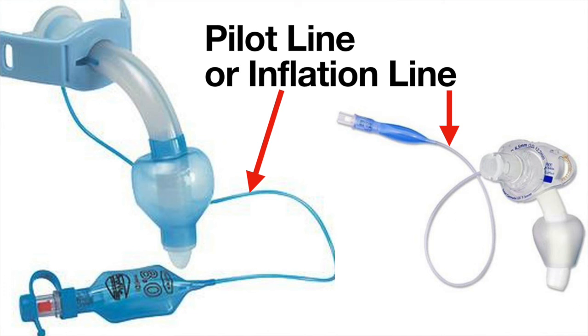There is a line which hangs off the exterior of the tracheostomy tube. This is called a pilot line or inflation line. This line enables the cuff on the tracheostomy tube to be inflated.